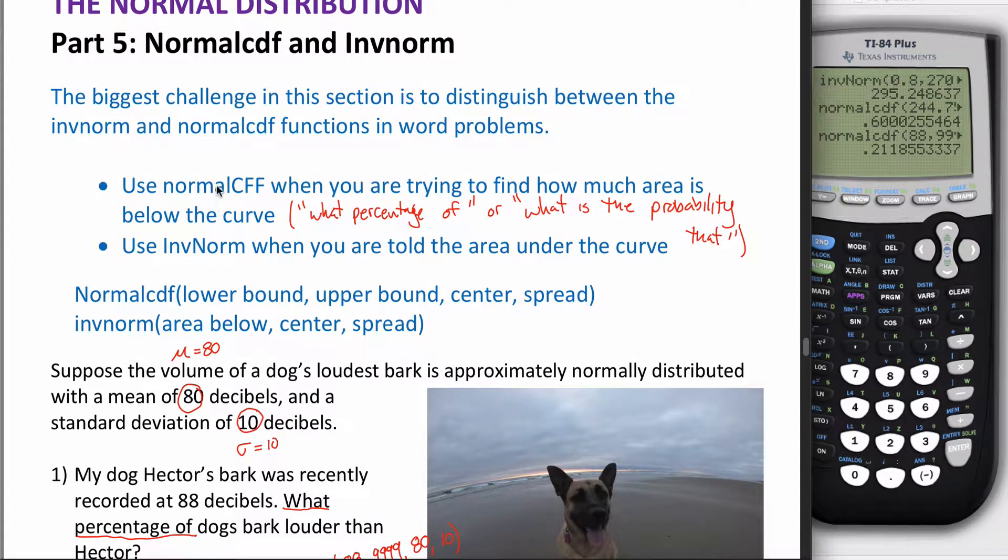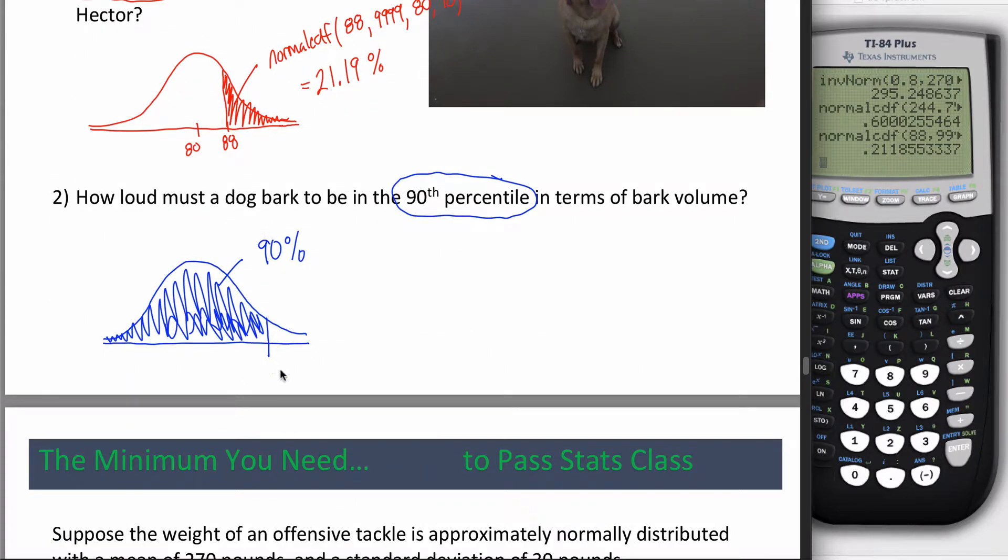When they say the 90th percentile, they're saying find the point so that the area to the left of that point is 90%. If it was the 70th percentile, the area to the left would be 70%. It's always the area to the left when we're talking about percentiles. Given to me in the problem is this area. Hint: when you're trying to use inverse norm, it won't always use the term percentiles, but when it does, odds are you have an inverse norm question. I need to find this number.